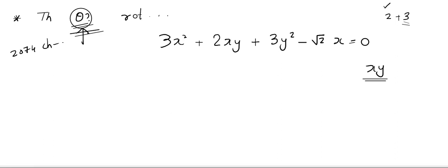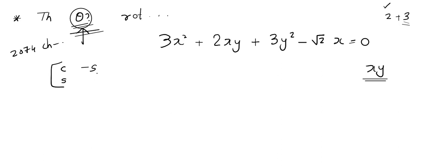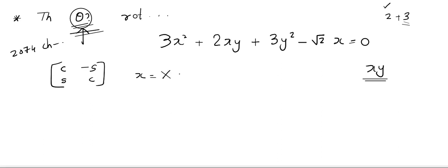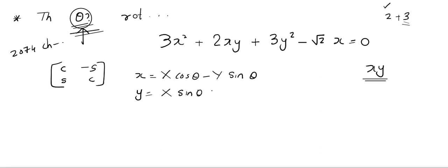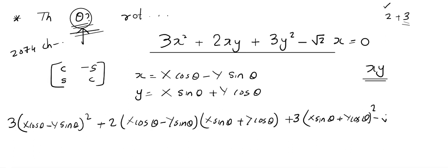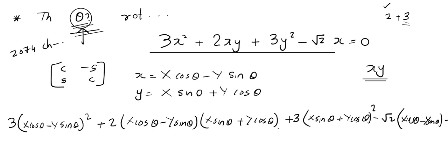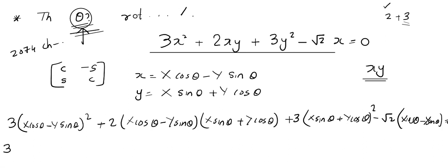Let θ be the required angle. Using the rotational matrix, the transformation formulas are: x = X cos θ − Y sin θ and y = X sin θ + Y cos θ. We substitute these into the equation. Our aim is to find θ in such a way that the XY term will disappear.